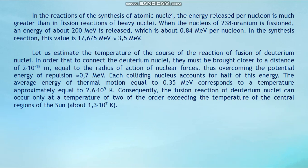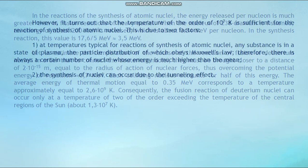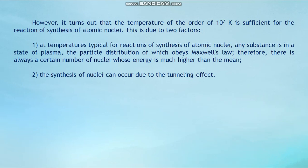Consequently, the fusion reaction of deuterium nuclei can occur only at a temperature of an order exceeding the temperature of the central regions of the sun — about 1.3×10⁷ K. However, it turns out that a temperature of the order of 10⁷ K is sufficient for the thermonuclear reaction of synthesis of atomic nuclei.